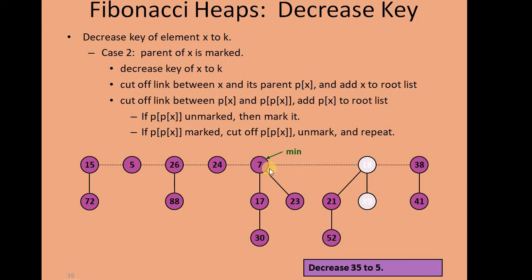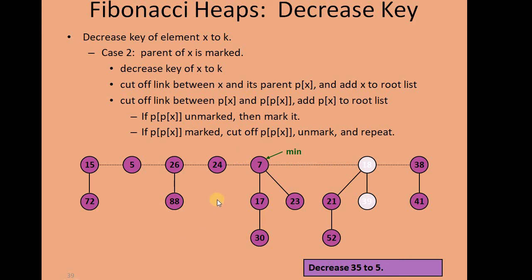If required, we update the min pointer. To update the min pointer, we use the approach we saw during the delete-min-key operation: we use a buffer, start from the leftmost tree, and try to update the min key. This is how we perform the decrease key operation — we have decreased a key from 35 to 5.